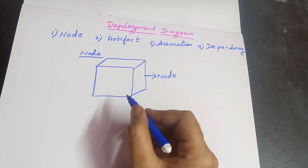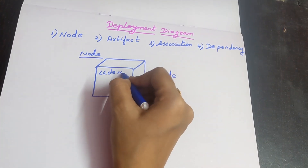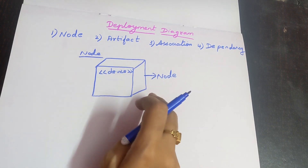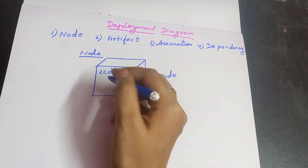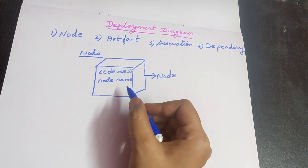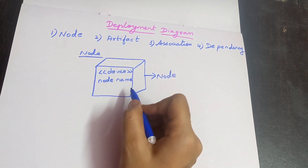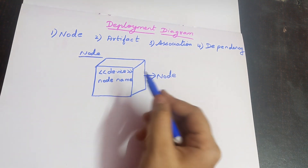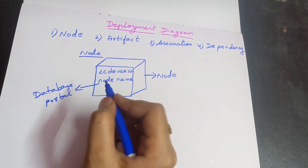After drawing this box, inside this box you need to put the double angle bracket symbol and write 'device' and close it. That is your second step. The third step is you have to write the node name below the device label. For example, if the topic given to us is online shopping system, the node name could be 'database portal'.